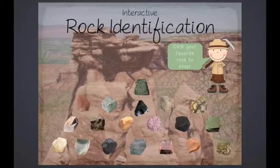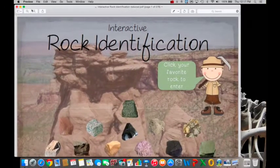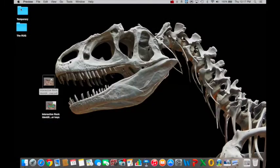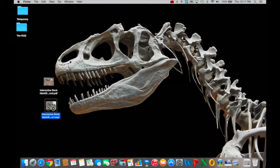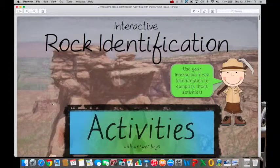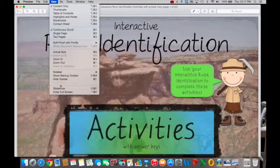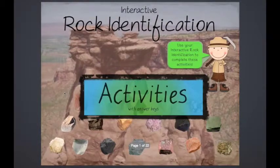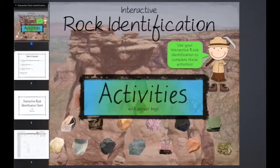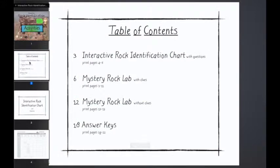Now we'll take a quick look at some activities that go with the interactive rock identification. Another PDF file contains those activities. These activities can be used on a computer, or they can be printed out. The table of contents shows which pages to print for each activity.